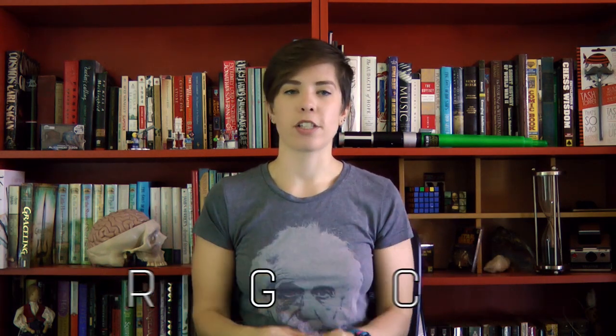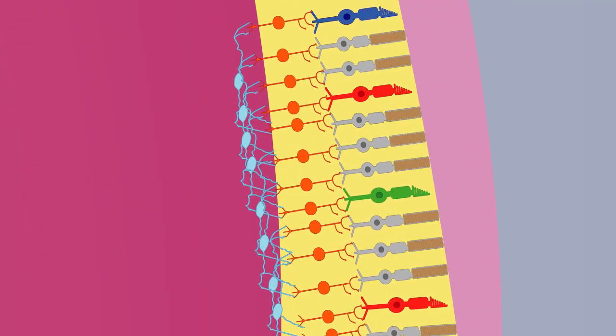The two different on and off signals are important for creating contrast and allow your eye to detect edges. No matter which kind of bipolar cell they are, they all connect to retinal ganglion cells, or RGCs. These RGCs sit in a layer on top of all the other cells in your retina, and these are the cells that project to your brain.